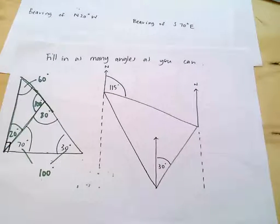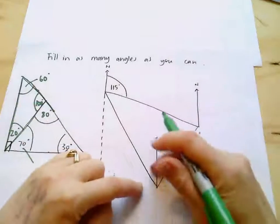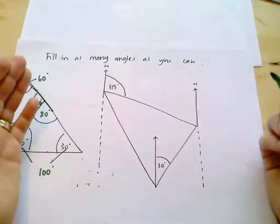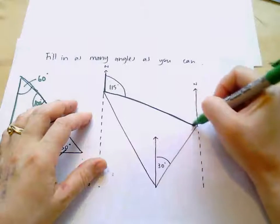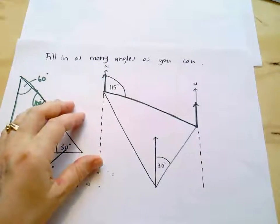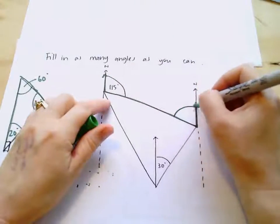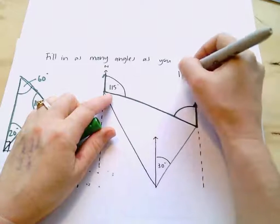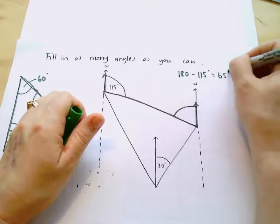Let's have a look at this next one here. It is more like a bearings question which I know some of you struggle a little bit with. I've been told that this is 115 degrees and I just want to fill in what I can. I've also got down here that this one's 30. The first one I'm going to use is that this forms the U or co-interior. I know that they're both facing north so they're parallel — all of those rules only apply to angles that are on parallel lines. So, these two have to add up to 180. If this is 115, I'd work out this angle by doing 180 minus 115 degrees, which gives me 65.